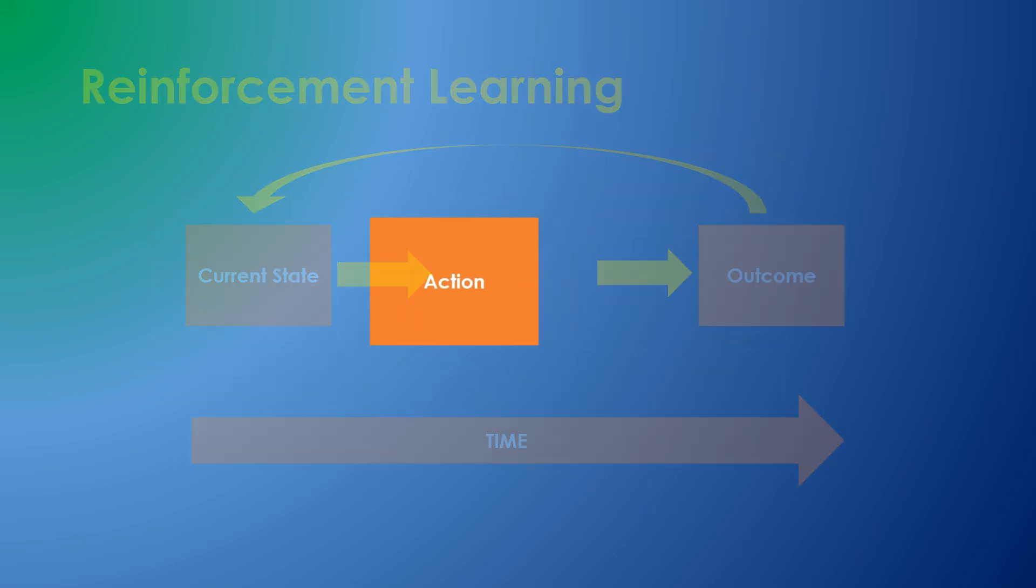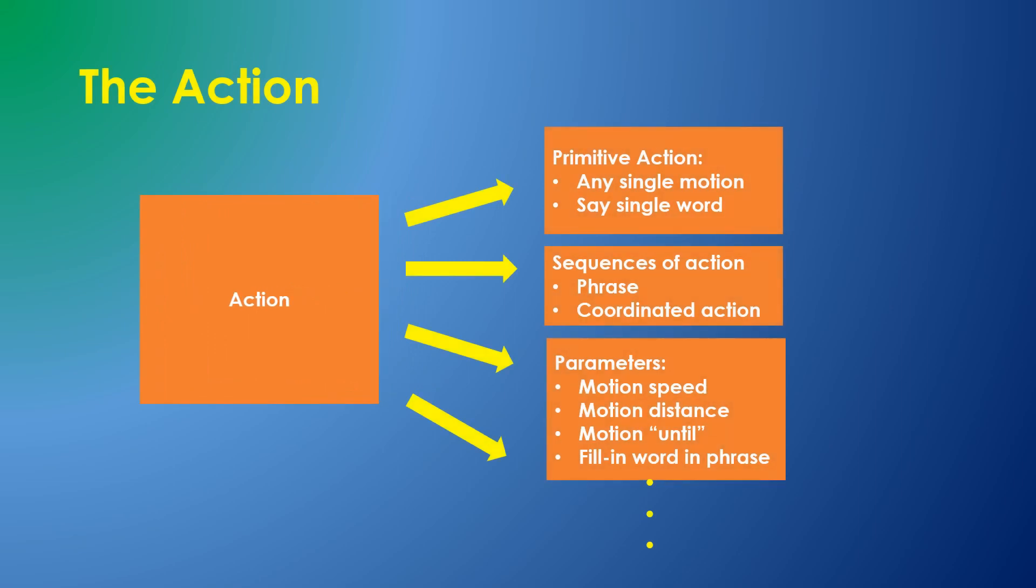The action could represent some primitive action such as a single muscle contraction, or in Sally's case, there are a number of primitive actions like the ability to say a single word. But these can be expanded to create sequences of primitives, so a person could learn to walk or play a piano, or Sally can speak a phrase.